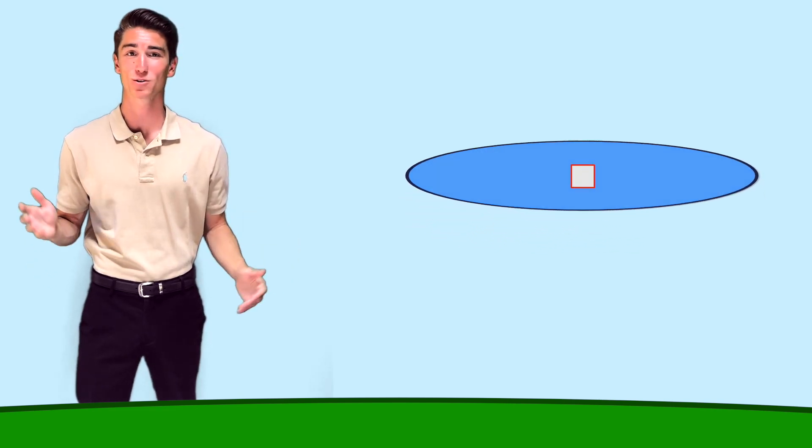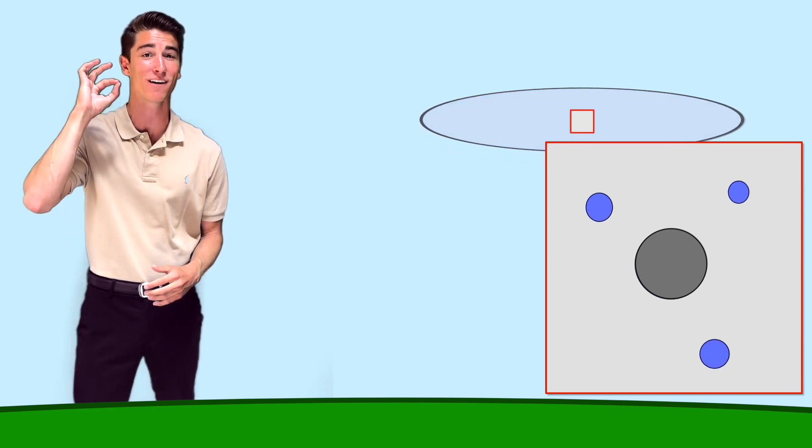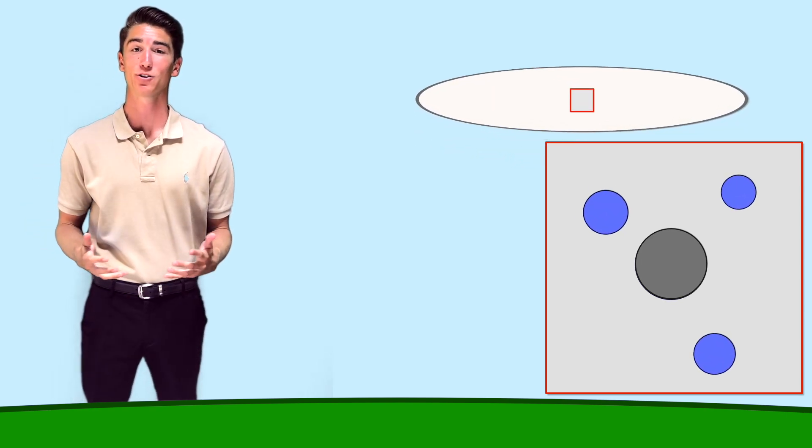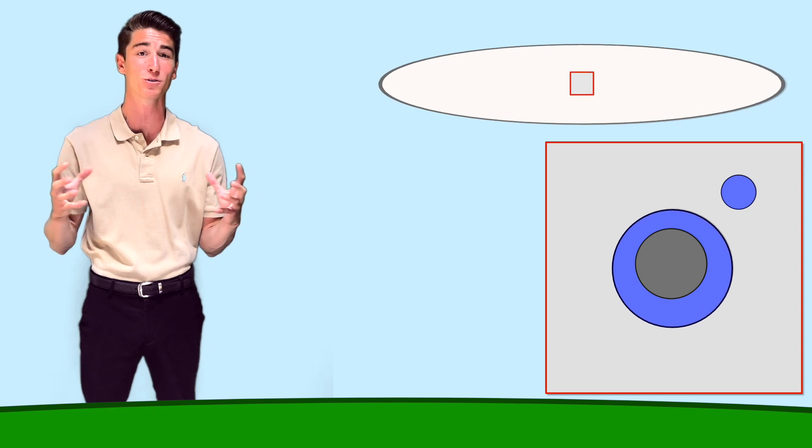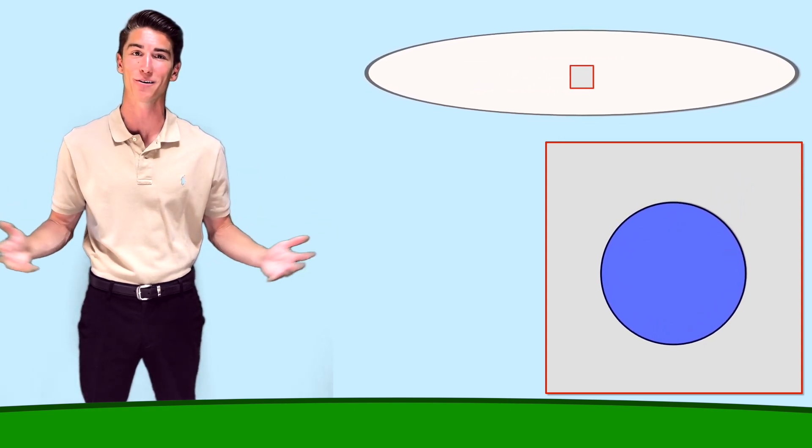Cold air can't hold as much water vapor as warm air, so the gaseous water vapor starts turning into tiny droplets of liquid water. These tiny droplets of water condense onto particles like salt and dust in the air, and when enough of them form, we get a cloud.